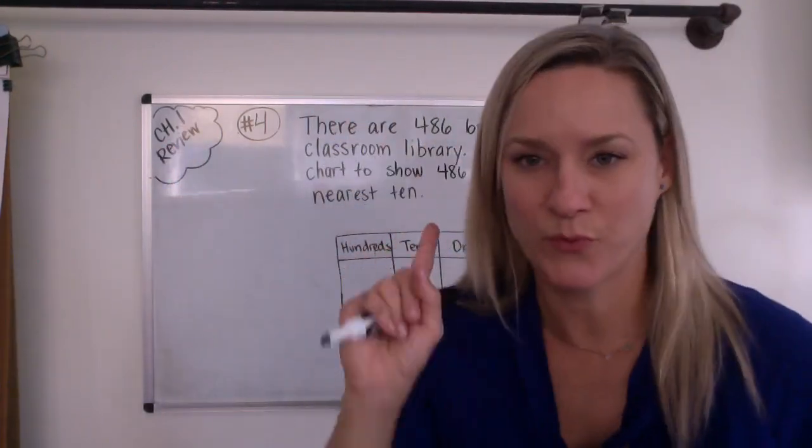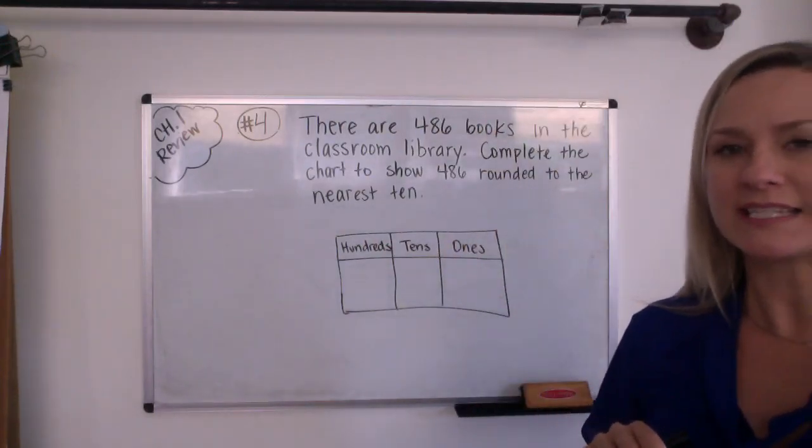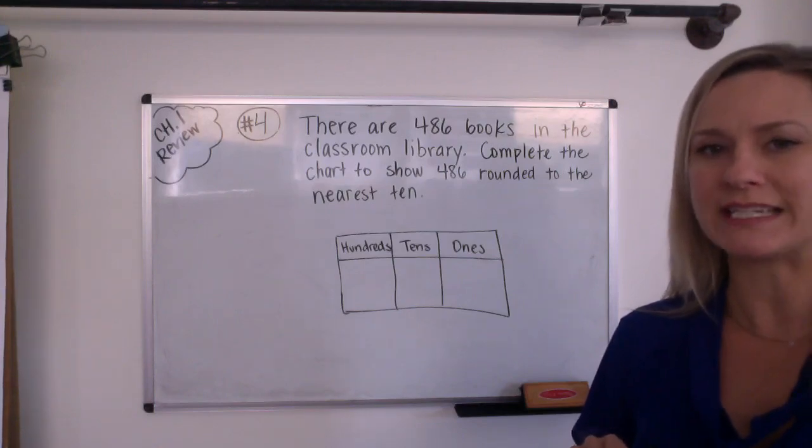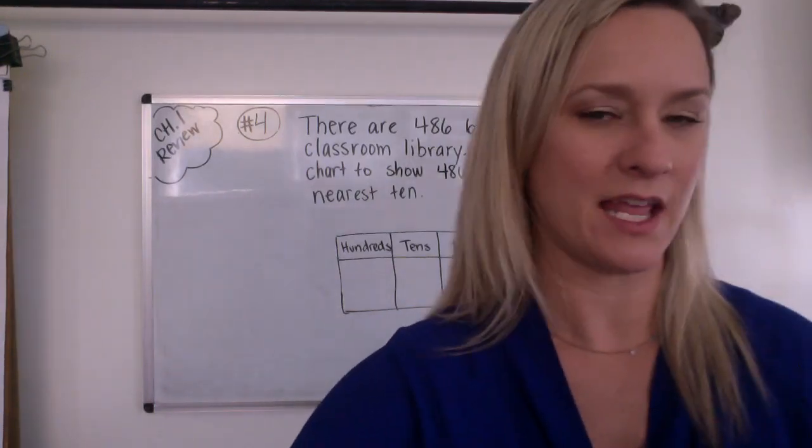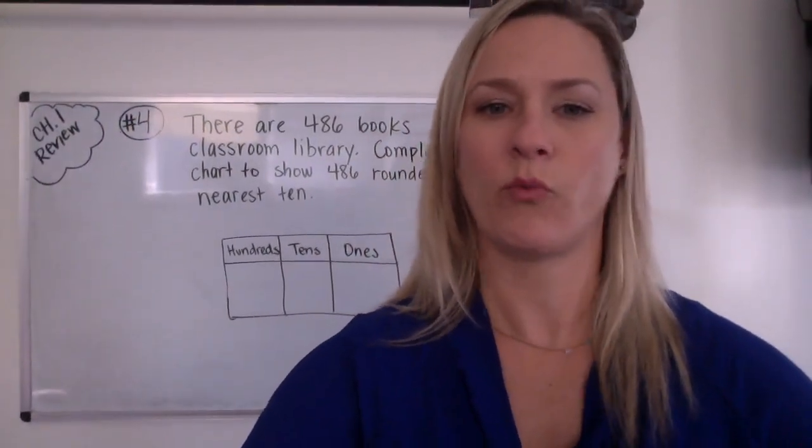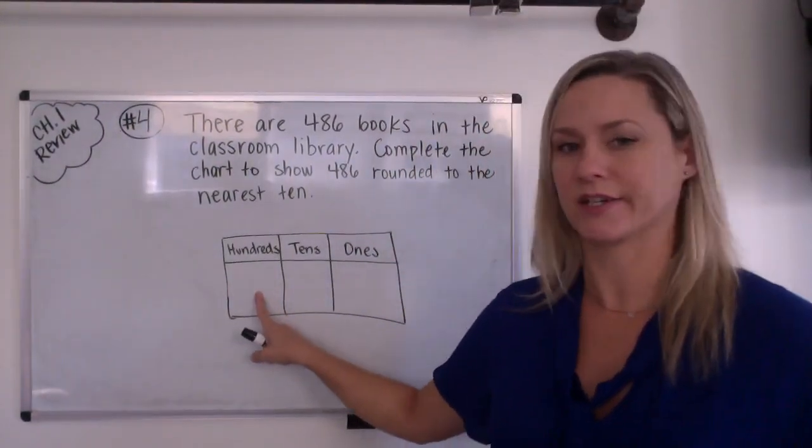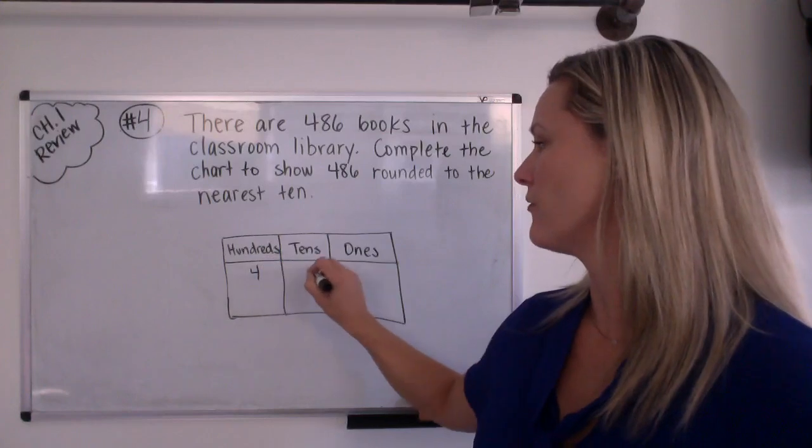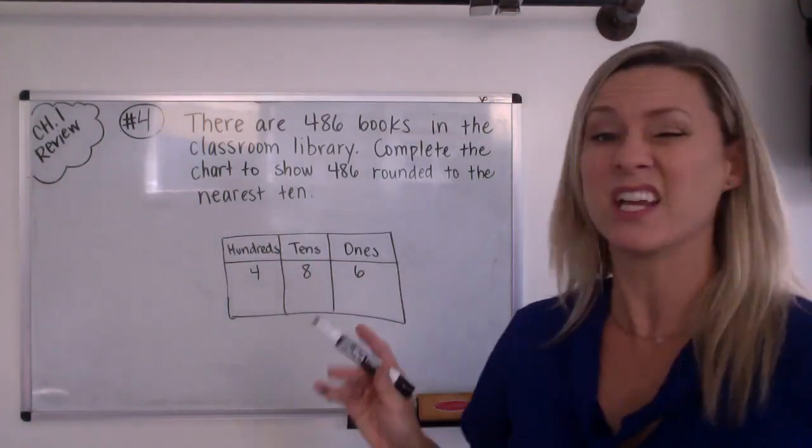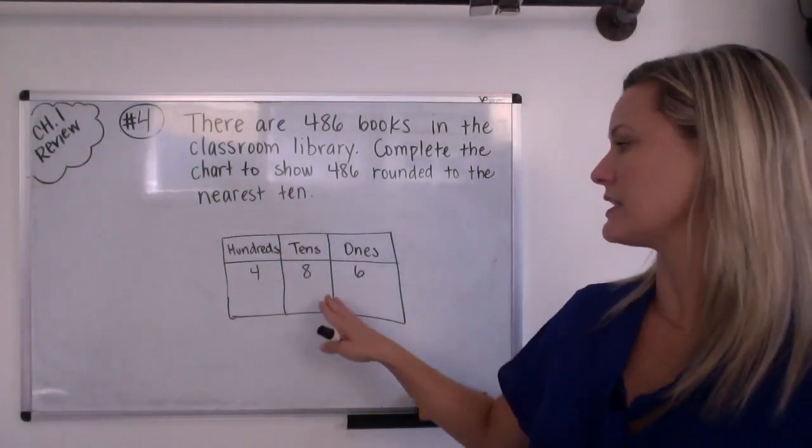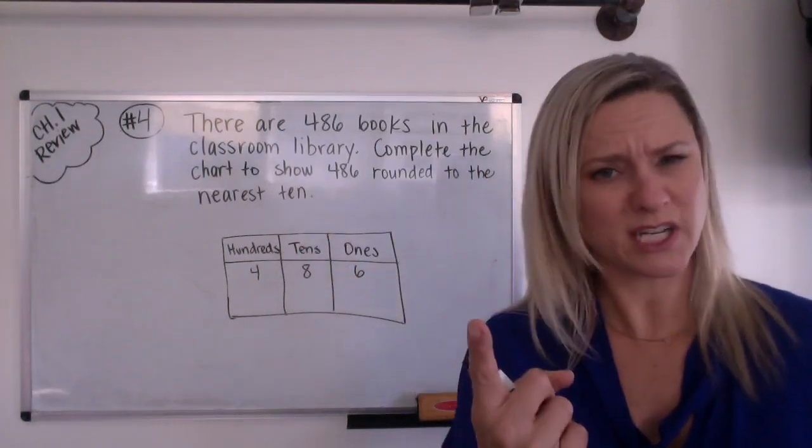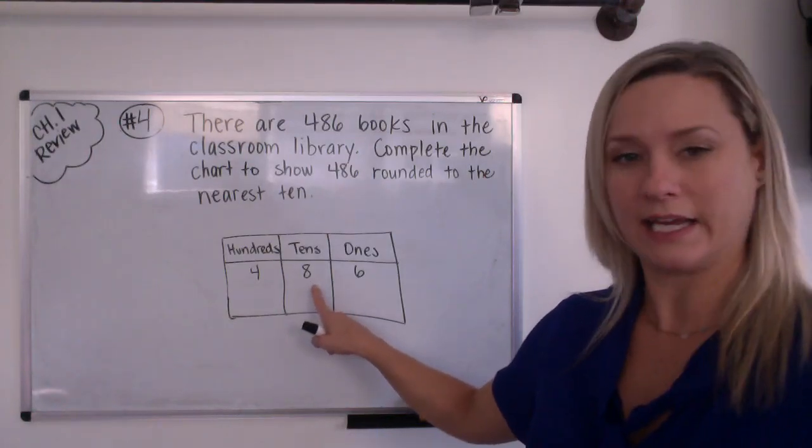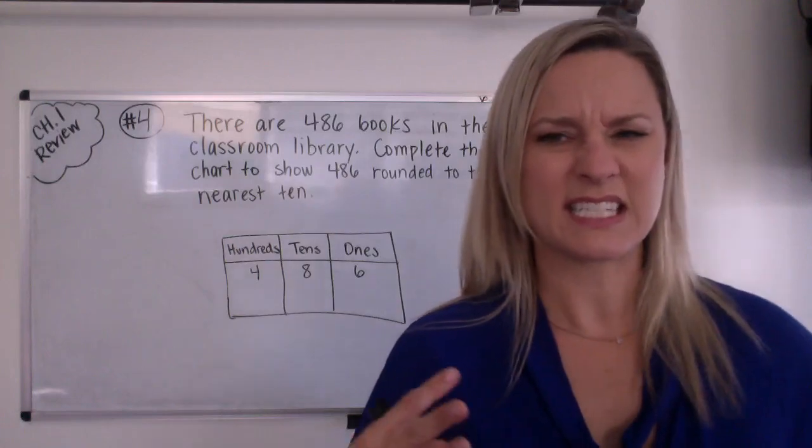Okay, so let's read it together. There are 486 books in the classroom library. Complete the chart to show 486 rounded to the nearest 10. All right. So we are going to use this here. I actually kind of want to just I'm tempted to just put 486 here for a minute. Don't put it in your book. I just want you to see that eight is in the tens place, which I think you probably knew, right?